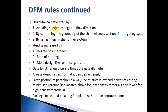Turbulence can be prevented by avoiding sudden changes in flow direction, by controlling the geometry of the channel cross-section in the gating system, and by using filters in the runner system. Fluidity can be increased by process parameters like degree of superheat and rate of pouring, and by design parameters like mold design configurations. The gate line should be kept about 3 to 5 times the gate diameter, and the parting line should be along a flat plane rather than a contoured one, since costs for a flat parting line are lower.